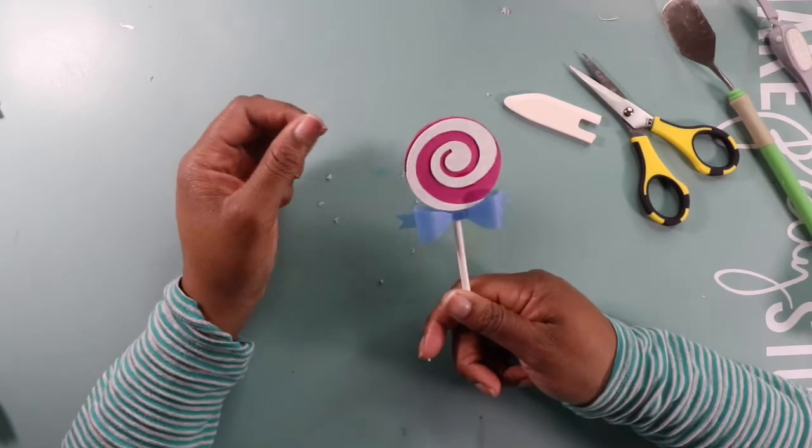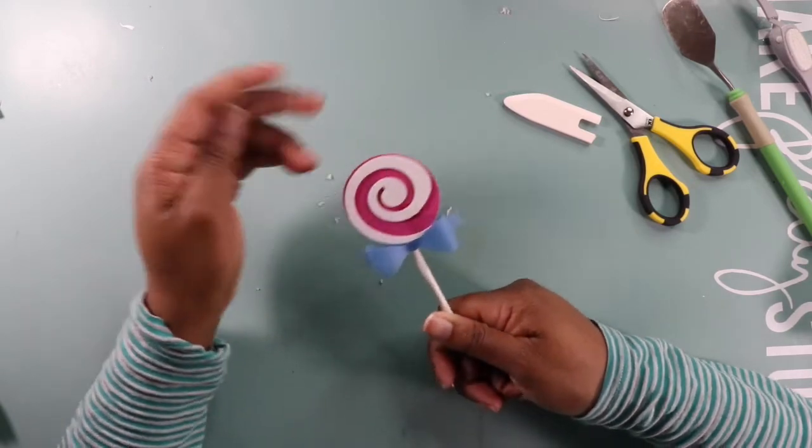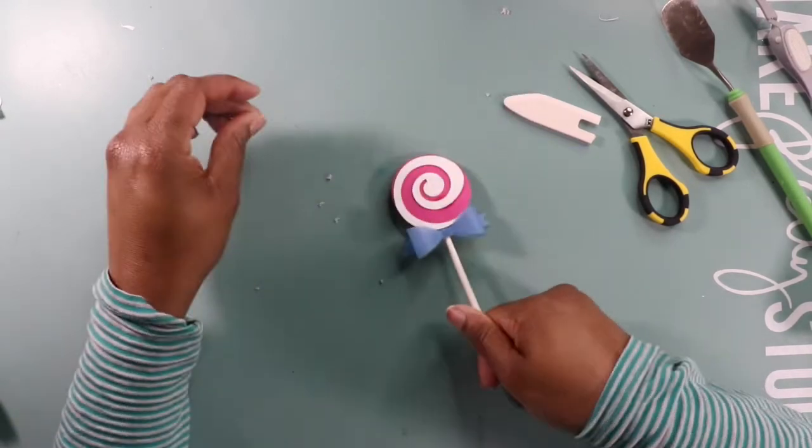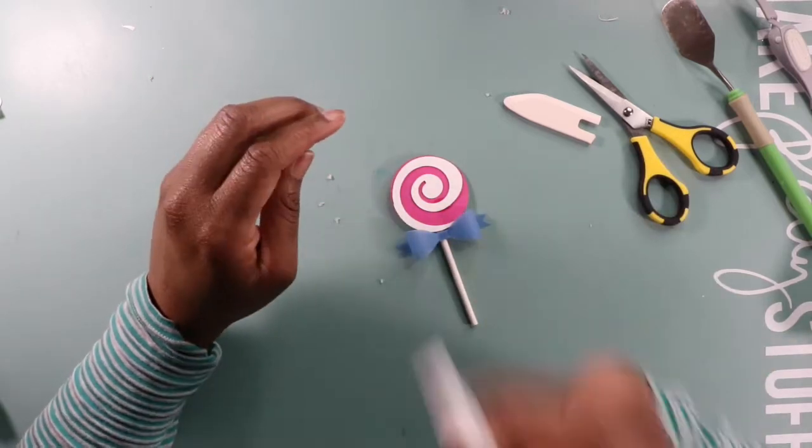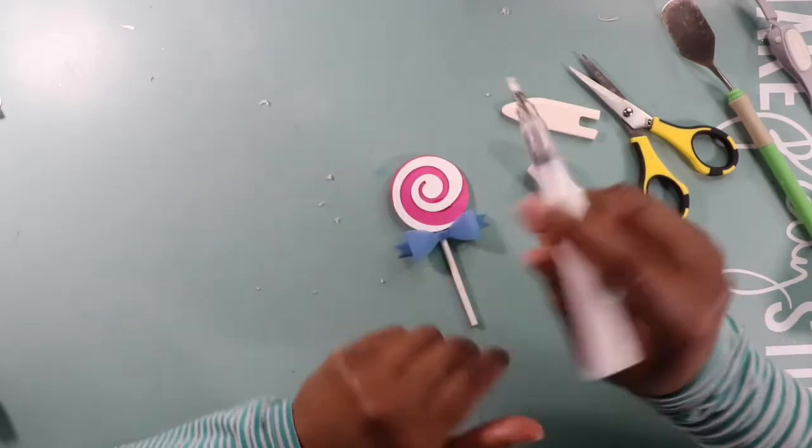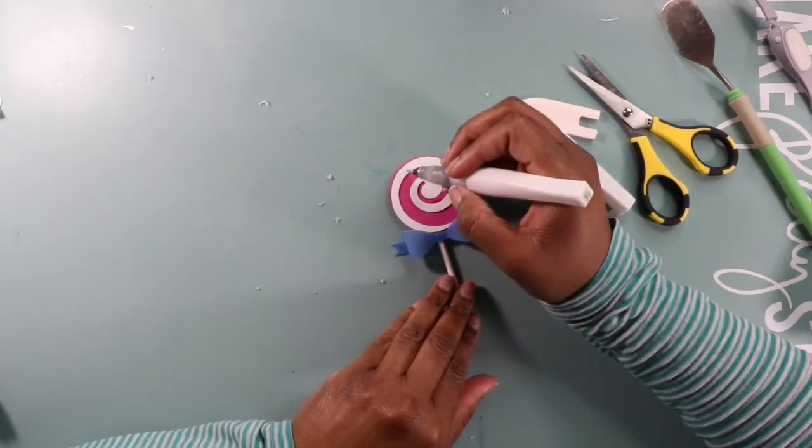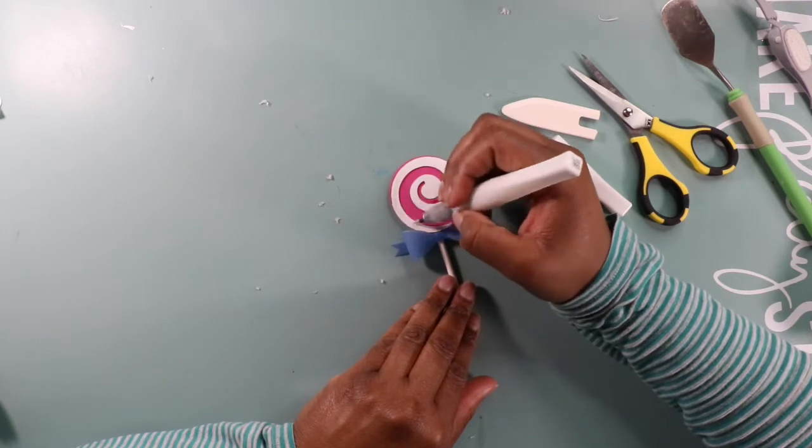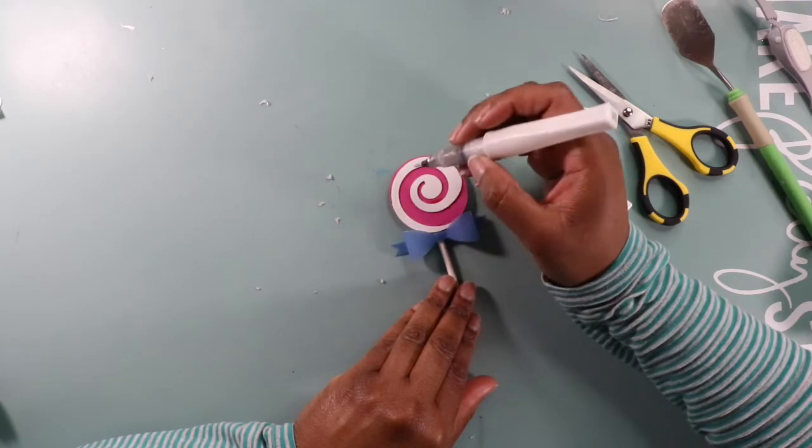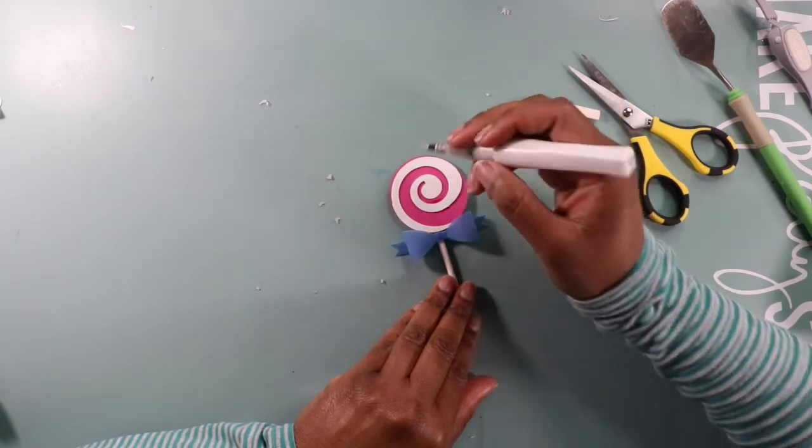And there we go how cute and simple this is. Now the next step I am going to do is kind of fancy it up a little bit so I'm gonna take some Liquid Stella and put this on my white part just to give it a little sparkle.